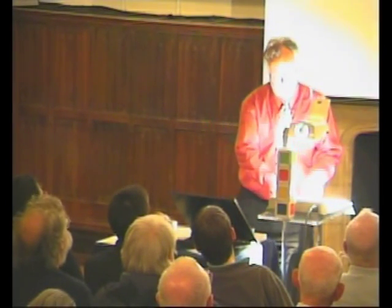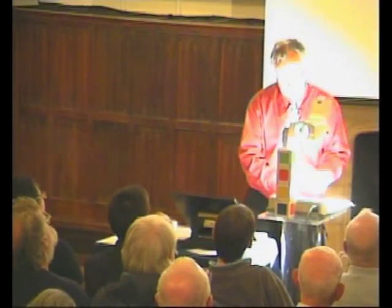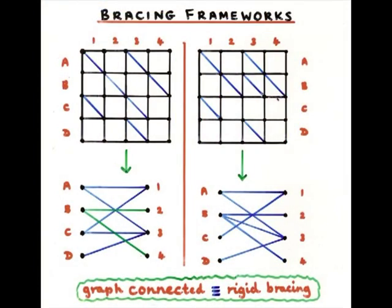What you do is you draw a graph. In the trade, we call it a bipartite graph. And what we do is we draw a graph, and on the left we have the rows. On the right, we have the columns.